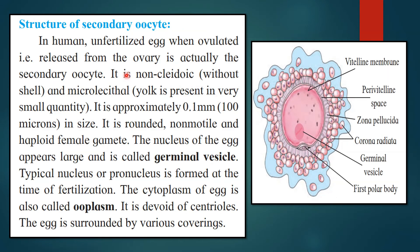Structure of the secondary oocyte. One important point: in humans, the unfertilized egg that is ovulated, i.e., released from the ovary, is actually the secondary oocyte. It is non-cleidoic — that is, without a shell. Hens and ducks have eggs with shells, making them cleidoic, whereas the human egg is non-cleidoic. It is microlecithal, meaning yolk is present in very small quantity. It is approximately 0.1 mm, that is 100 microns in size. It is rounded, non-motile, and a haploid female gamete.